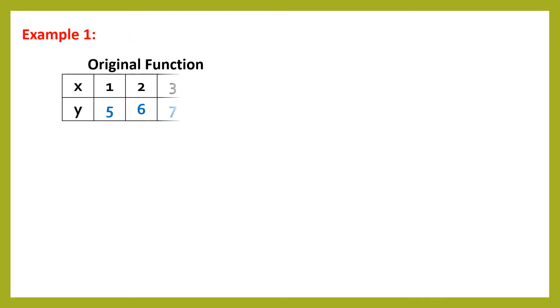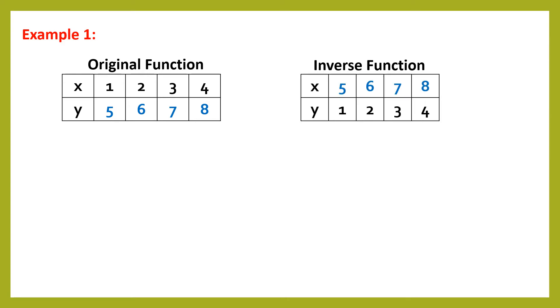For example, in the original function, as you can see in the table, the values of x are 1, 2, 3, and 4, and the values of y are 5, 6, 7, and 8. In the inverse function, they will reverse. So the values of x will become 5, 6, 7, and 8, and the values of y will become 1, 2, 3, and 4.